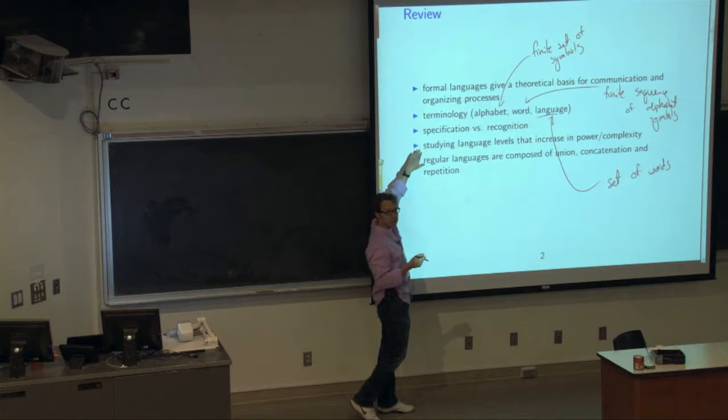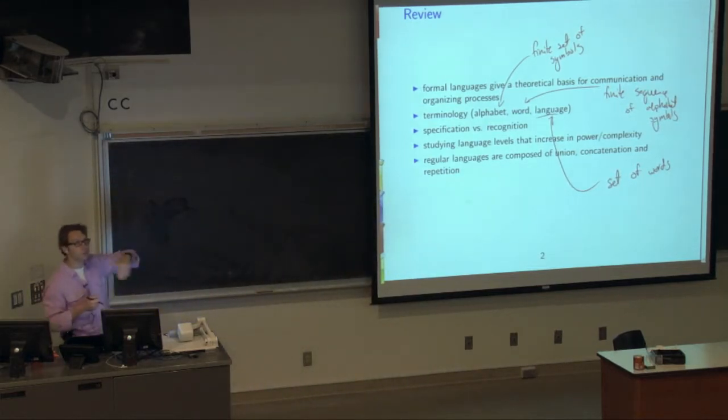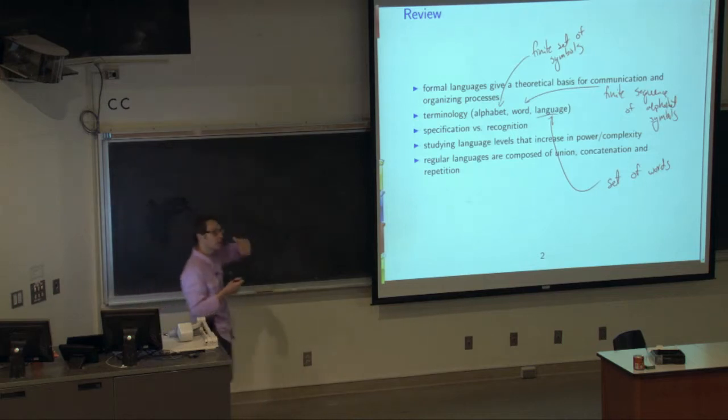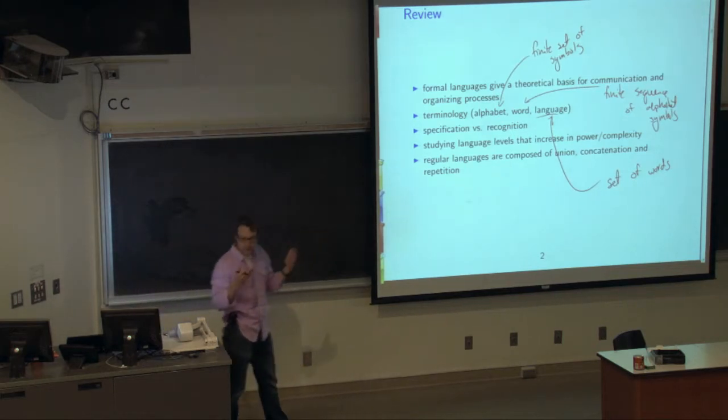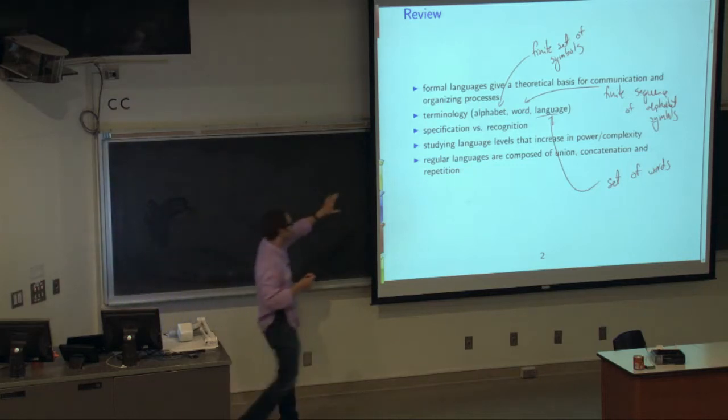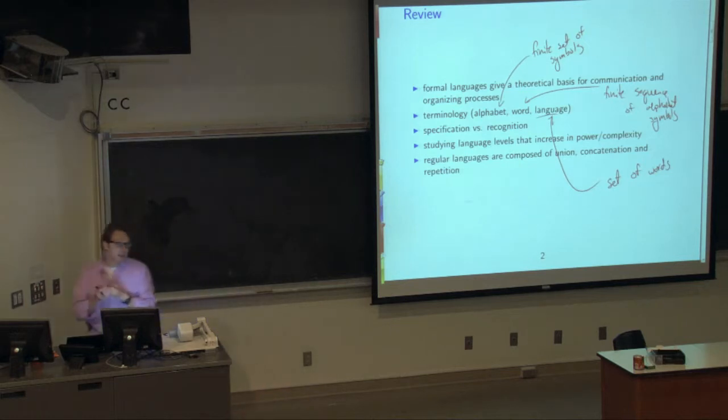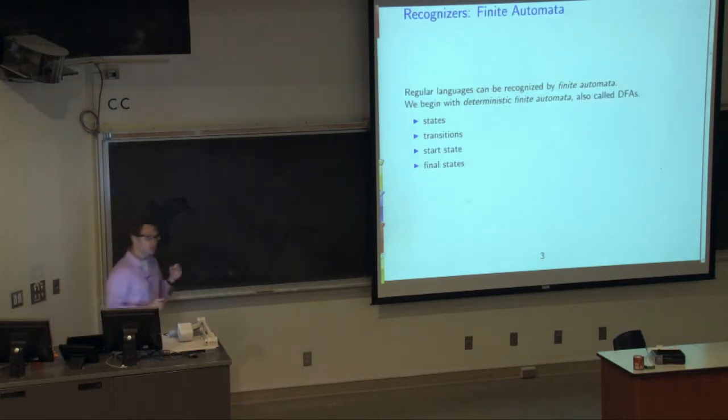We're talking about different language levels, and this is kind of the first language level we will talk about. As we go through the course, we'll talk about higher levels of languages, which allow us to recognize kind of different classes of languages. And so far, we've talked about the first class, which is the regular class of languages. They are composed of unioning, concatenating, and repeating elements.